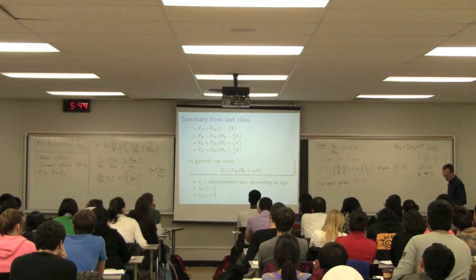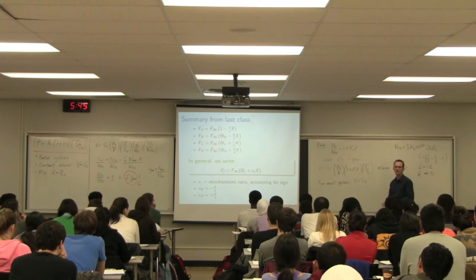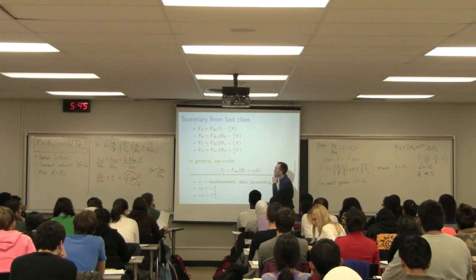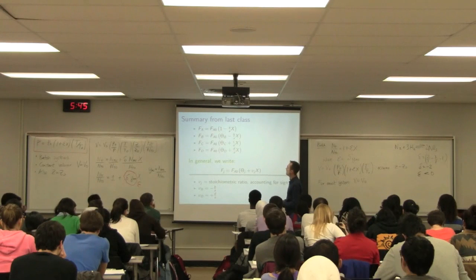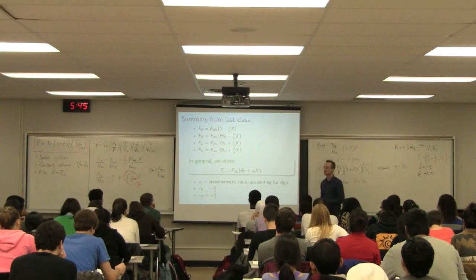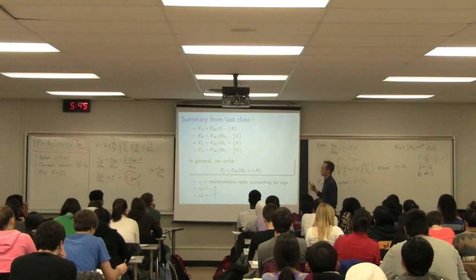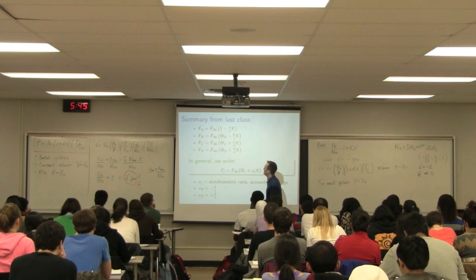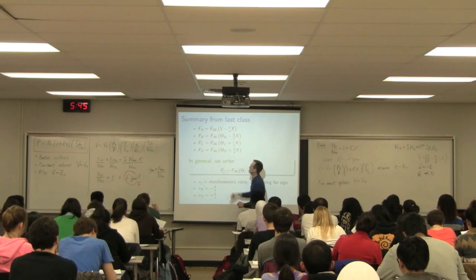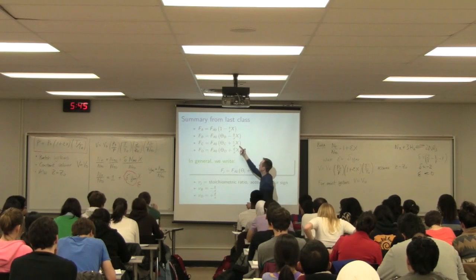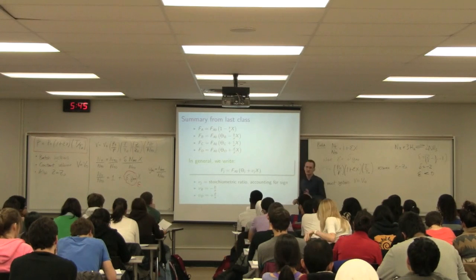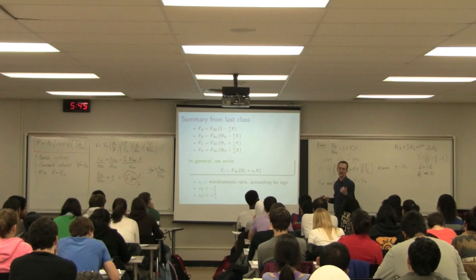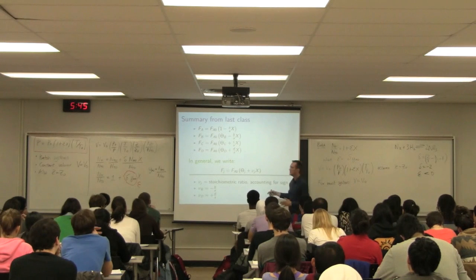Let me point out some additional notation. If I take that molar flow Fₐ, it's Fₐ₀ minus (a/a) times the conversion X — that's standard from the slides. We also have: F_B equals Fₐ₀(θ_B − b/a × X), F_C equals Fₐ₀(θ_C + c/a × X). We can write general equations as F_J equals Fₐ₀(θ_J + ν_J × X), rather than writing separate equations four times for A, B, C, D.